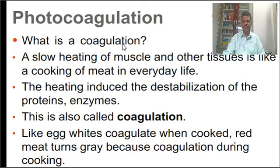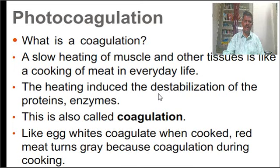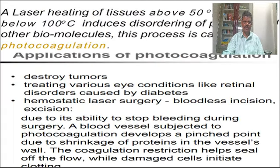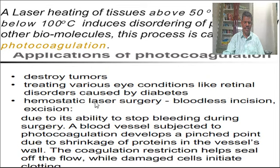Another characteristic is that the laser beam causes coagulation — a slow heating of muscle and other tissues, similar to the cooking of meat in everyday life. This causes changes in different tissue characteristics, called destabilization. Tissues contain various proteins and enzymes that may be denatured by heat. This process is called coagulation. Photocoagulation is used medically for destroying tumors and for blood clotting purposes.